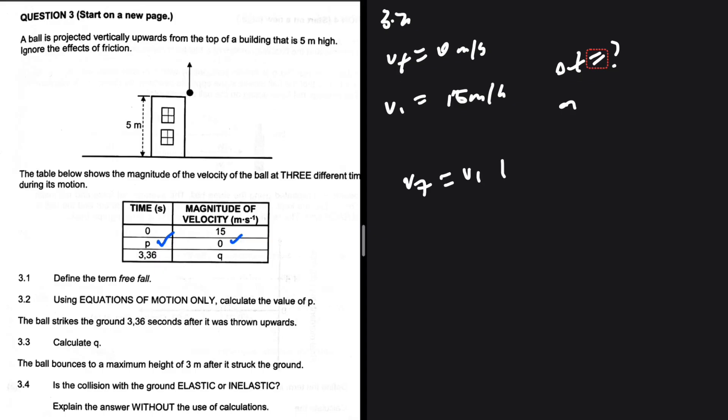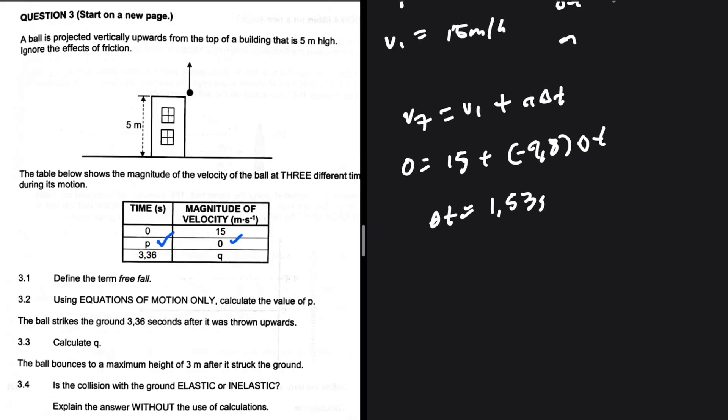vf equals vi plus a delta t. We were expecting this question to be the very first in Question 3, related to the maximum height. vf is zero, vi is 15 meters per second. Taking up as positive, plus acceleration minus 9.8 delta t. Delta t equals 1.53 seconds. We've solved so many problems in vertical projectile motion. We know that if the initial velocity is 15, it will take 1.53 seconds to reach the maximum height.